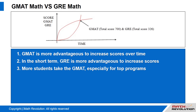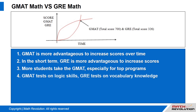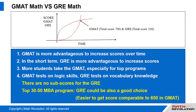Although MBA programs in the U.S. say there is no advantage for one exam over the other, more students take the GMAT, especially for top programs. The GMAT tests students on their logic skills, and the GRE tests students on their vocabulary knowledge. There are no subscores for the GRE. If you are aiming for a top 30 to 50 MBA program, taking the GRE could be a good choice. It is easier to get a GRE score comparable to 650 on the GMAT, but remember that GMAT is designed better to test students for the requirements of MBA programs. You can pick the one to better suit your current status and target schools.